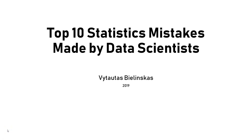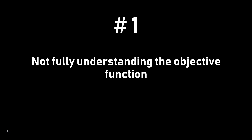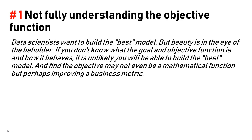Hello guys, today I will present the top 10 statistical mistakes made by data scientists, found on DataNuggets.com. Let's start. Number one: not fully understanding the objective function. Data scientists want to build the best model, but beauty is in the eye of the beholder.